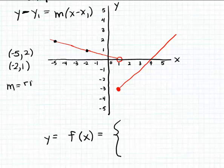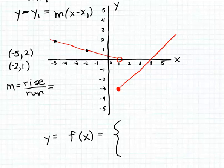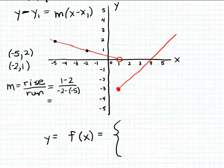Recall the mnemonic device: slope is rise over run. The rise is the difference between the y-coordinates of two points on the line, and the run is the difference between the x-coordinates. So the rise is 1 minus 2, and the run is −2 minus (−5). Simplifying, the numerator is −1 and the denominator is −2 + 5 = 3. So the slope of this line is −1/3.